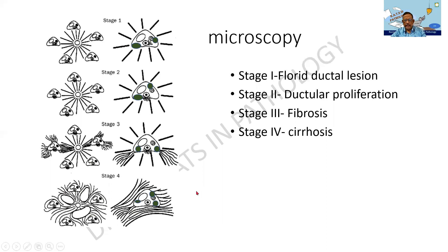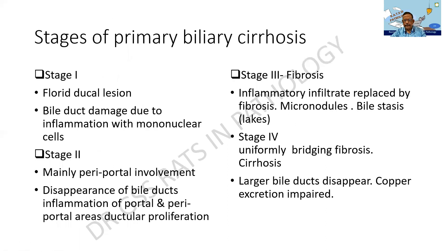Please draw this diagram and note these stages. Stage 1 is the florid ductal lesion — bile duct damage due to inflammation with mononuclear cells. Stage 2 is mainly periportal involvement with disappearance or destruction of the bile ducts and inflammation involving the portal triad. Stage 3 involves fibrosis — initially spurs of fibrosis, then micronodularity and bile stasis, classical of biliary cirrhosis, sometimes called bile lakes. Stage 4 is uniform bridging fibrosis from portal triad to portal triad or to the central vein, leading to cirrhosis, with disappearance of larger ducts and sometimes increased impairment of copper excretion.